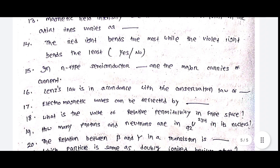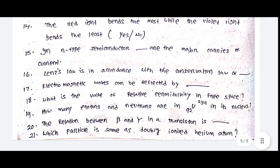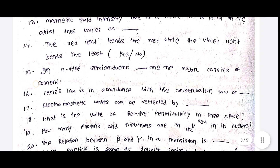The red light bends the most while the violet light bends the least — true or false. In N-type semiconductor, dash are the major carriers of current. Lenz's law is in accordance with the conservation law of dash. Electromagnetic waves can be deflected by dash. What is the value of relative permittivity in free space? How many protons and neutrons are in U-92-234 in its nucleus? The relation between beta and gamma in a transistor is dash. Which particle is the same as a doubly ionized helium atom?